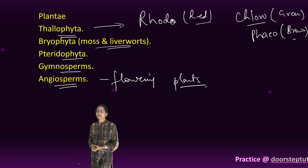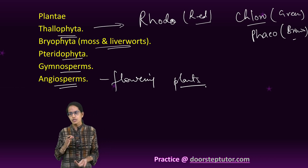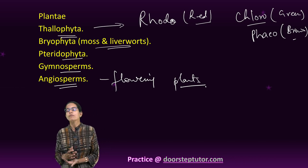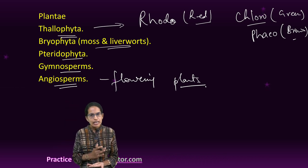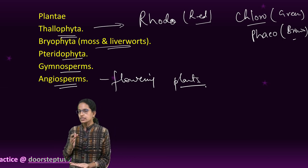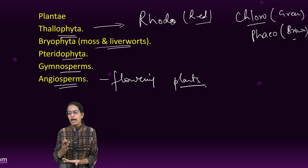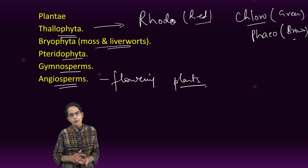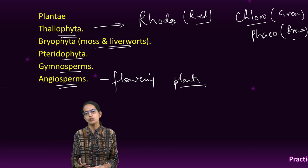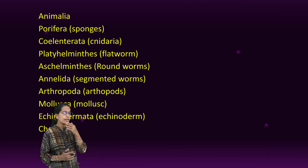The mode of nutrition in Plantae is autotrophic — they produce their own food. They are eukaryotic, multicellular, and higher-order complex organisms. The cell wall is made of cellulose, and the food reserve is starch. Reproduction can be both sexual and asexual.